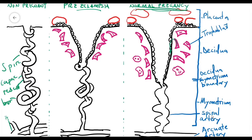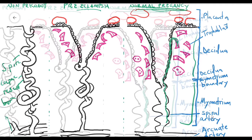What happens in normal pregnancy is that there is endovascular trophoblast invasion into the spiral arteries, and this occurs in two waves. The first wave occurs between 10 to 12 weeks of pregnancy, and the second wave occurs between 16 to 18 weeks. In the first wave, this invasion occurs only in the decidual segment. The second wave occurs where the trophoblast invades the spiral artery walls in the myometrial segment.